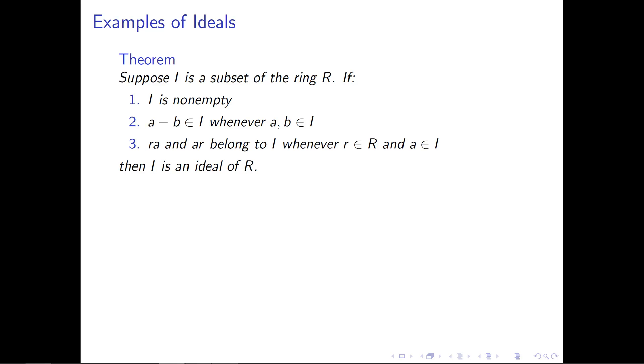Just as when testing for subrings, there's a nice theorem to check if we have an ideal. The notion of an ideal is not far from a subring, and this theorem is similar to the subring test. Suppose I is a subset of ring R. If three properties are met, then I is an ideal.